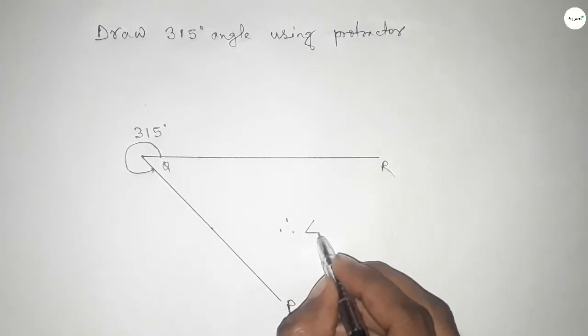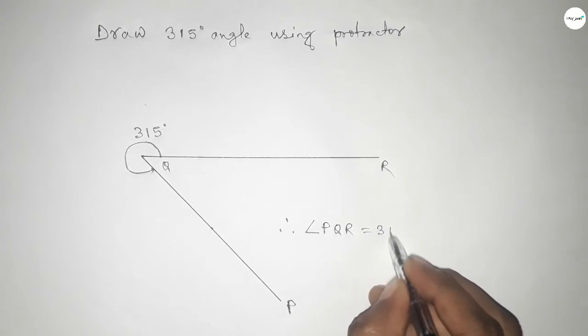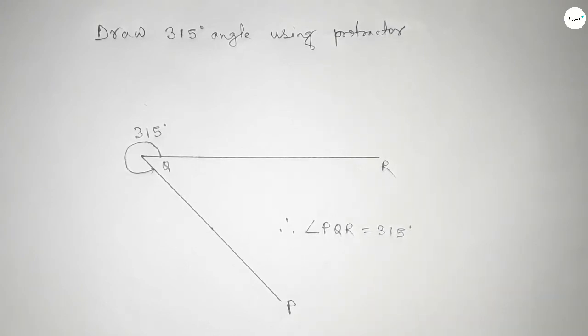angle PQR equals 315 degrees. That's all. Thanks for watching! If this video is helpful to you, then please share it with your friends.